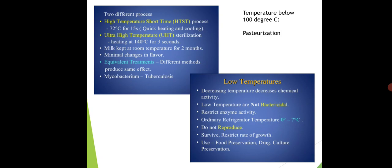In HTST, the temperature is 72°C for 15 seconds. The milk is heated at 72°C for 15 seconds and immediately allowed to cool at 13°C. That is termed as high temperature short time. The second class is ultra high temperature (UHT), where heating is provided at 140°C for three seconds.